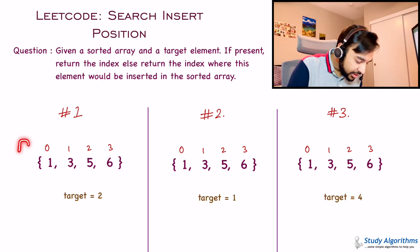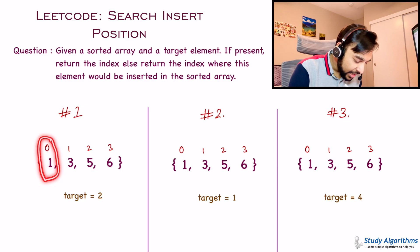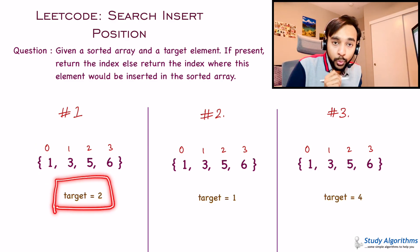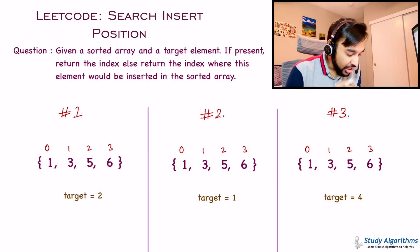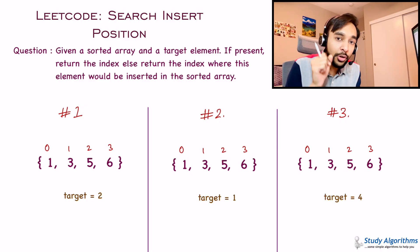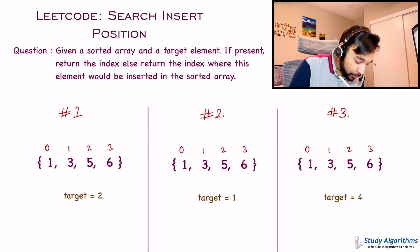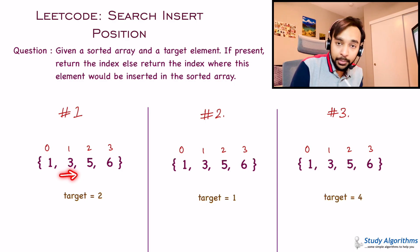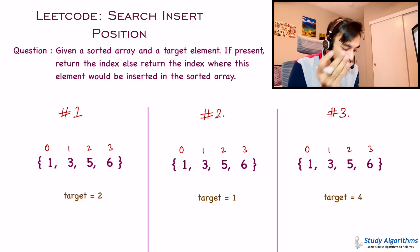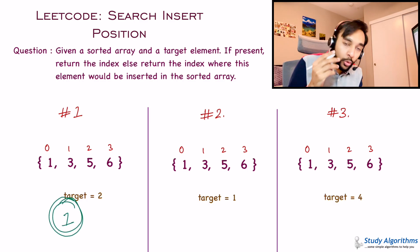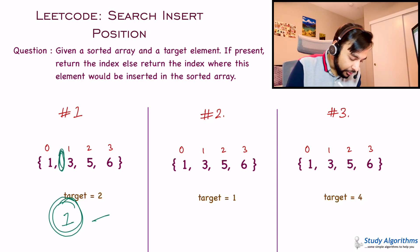In test case number 1, I have a sample array where 1 is at index 0 and 6 is at index 3, since arrays use 0-based indexing. The target element is 2. You need to first search if 2 is present in the array — you cannot find it. So you have to insert it at the correct position in the sorted array. Starting from the left, 1 is smaller than 2, so you move ahead. You see 3, which is greater, meaning 2 must go between 1 and 3, at index number 1. That is your answer for test case 1.